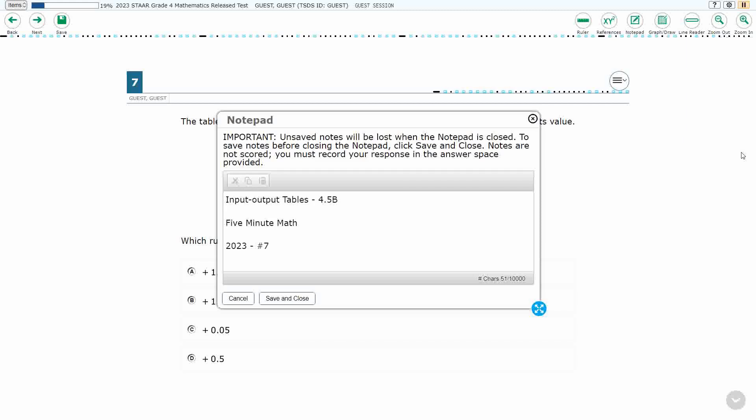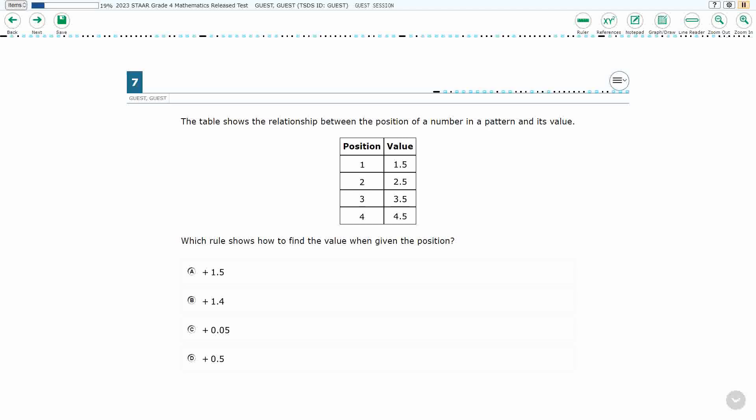Hello and welcome to 5-Minute Math. Today we are looking at the fourth grade concept of input-output tables. This is standard 4.5b in the great state of Texas and we're using item number 7 of the 2023 released STAAR test.